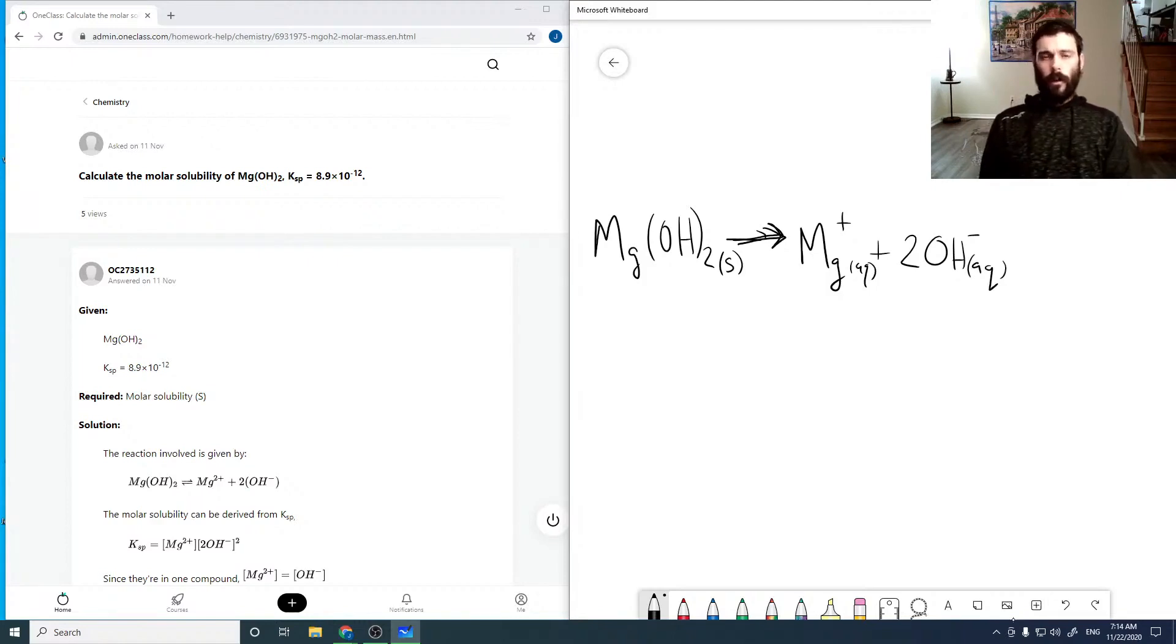And so we're given our Ksp as 8.9 times 10 to the minus 12, so we need to relate this to our concentration of ions, or our solubility of our ions that dissolve.